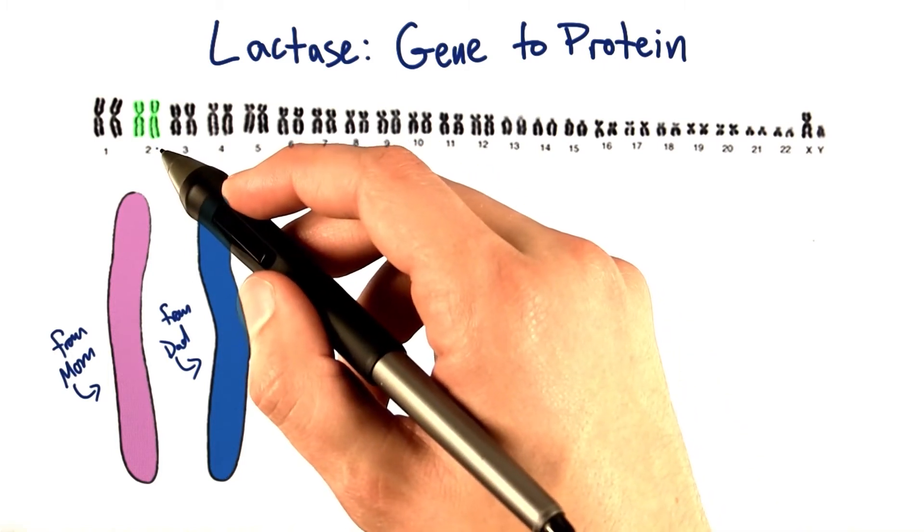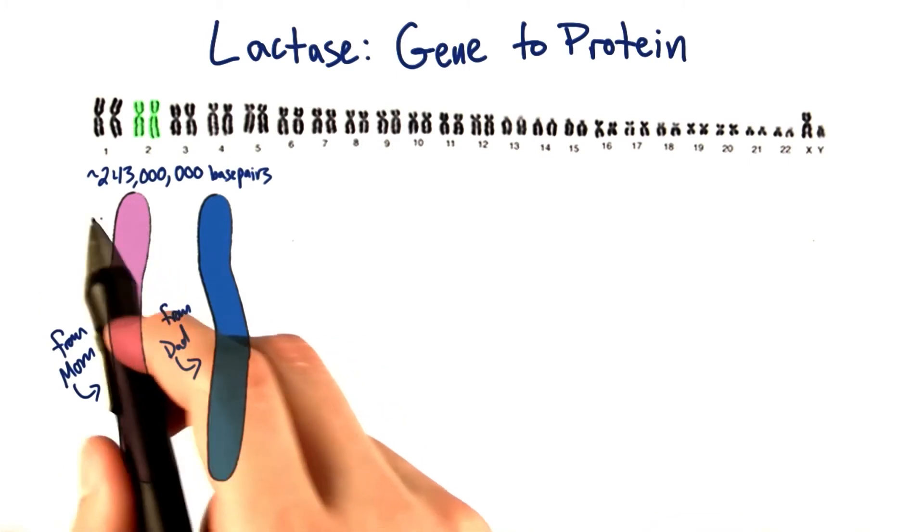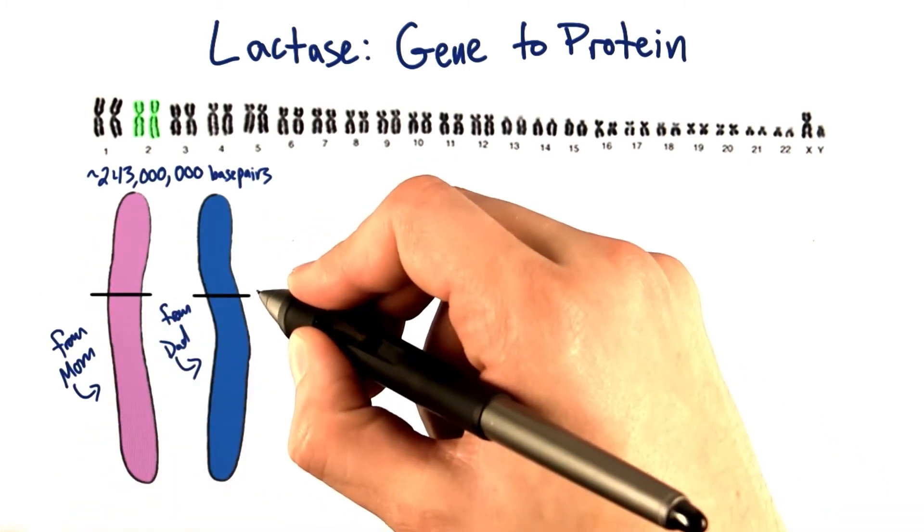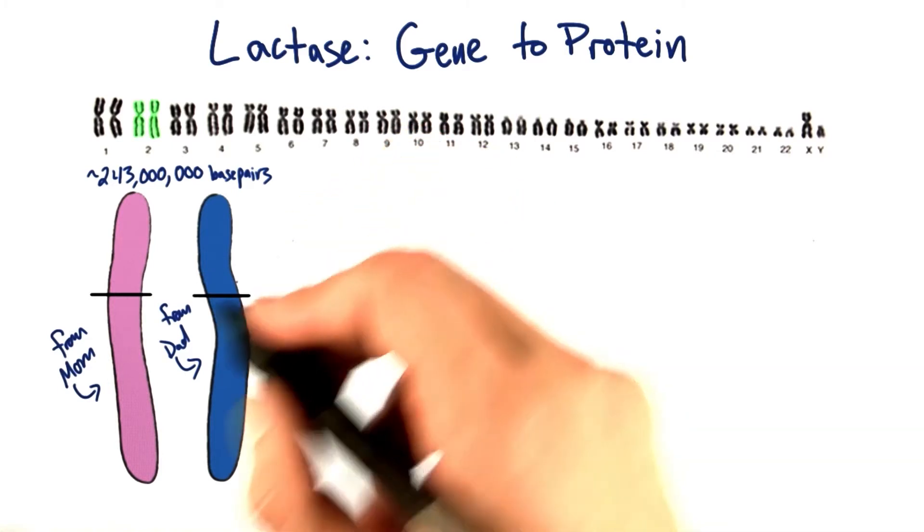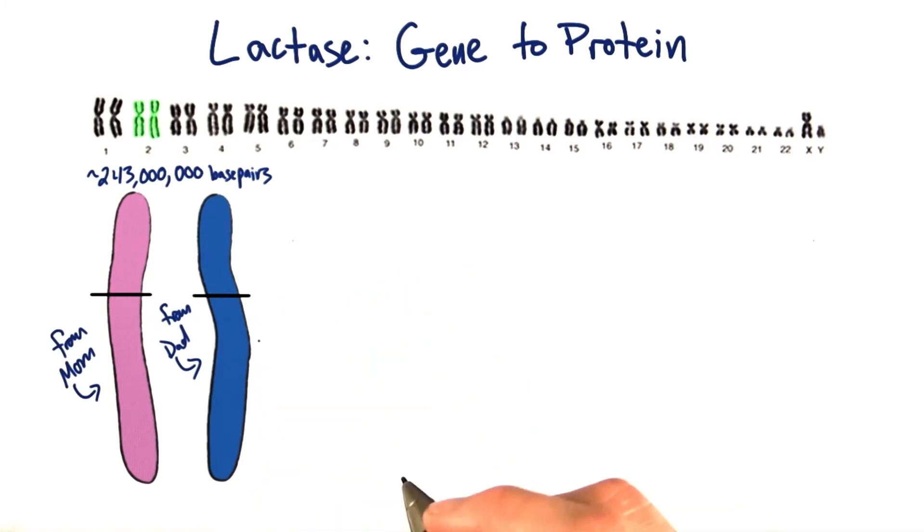Chromosome two is the next to largest chromosome in the whole genome. At approximately 243 million base pairs long, the lactase gene is located approximately halfway along chromosome two. Remember, you've got two copies, one on mom's chromosome and one on dad's chromosome.